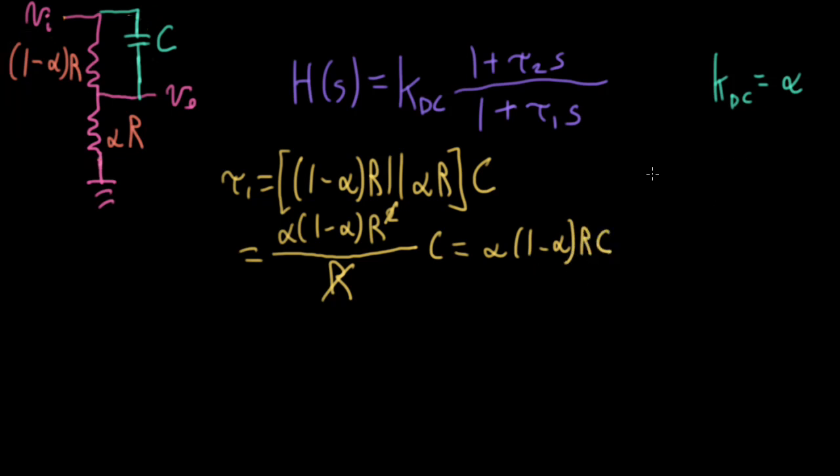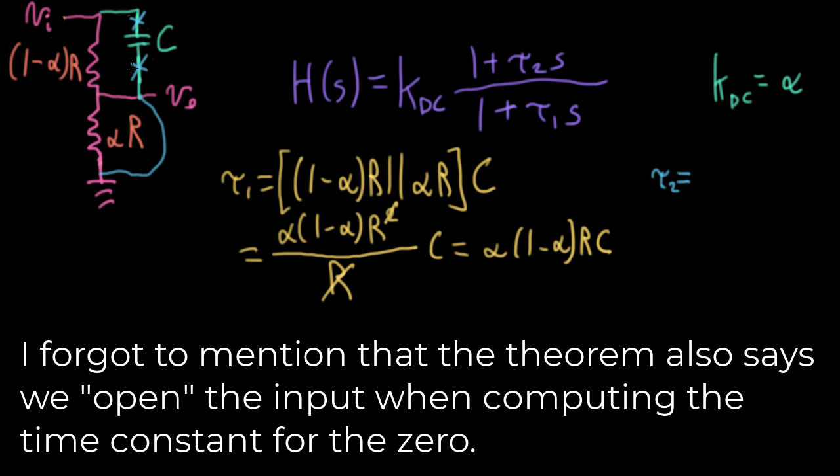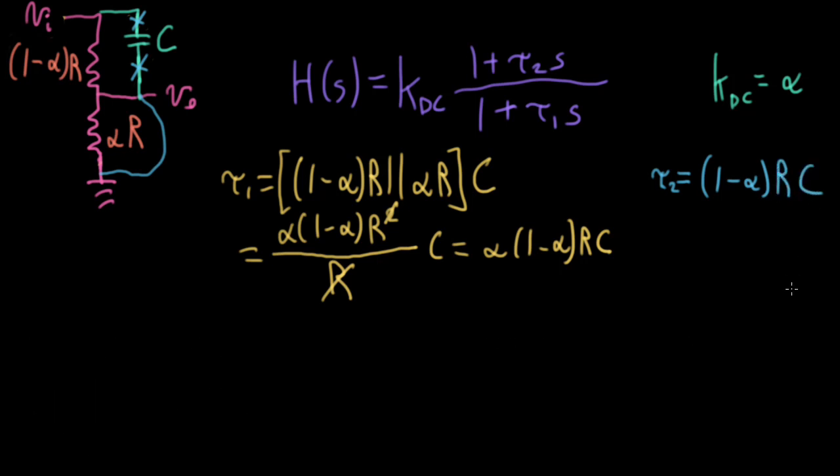So what about tau 2, the time constant associated with a zero? Well, Marshall's theorem says that to compute that, we can temporarily short the output to ground here and do the same thing. We'll look at what the resistance is measured looking out from the capacitor. And here, if we short the output like this, alpha r here is completely shorted out. So we just see a resistance of 1 minus alpha r, and I have to be sure to remember to multiply by c.